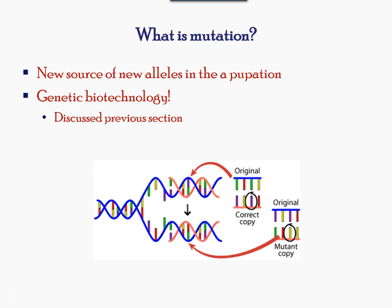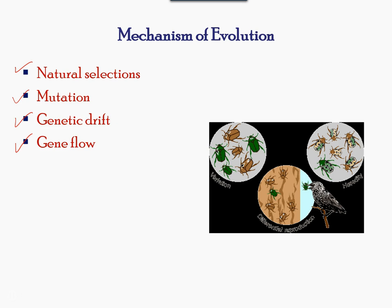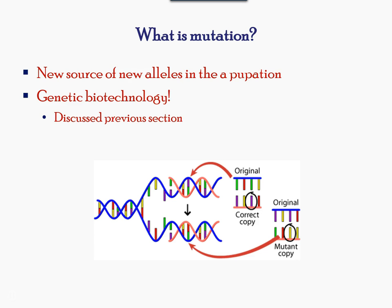Keep in mind, natural selection can only take place if there is variation among individuals in a population. As we learned earlier, genetic diversity results from sexual reproduction and mutation. A change in the DNA will result in genetic variations in a species.